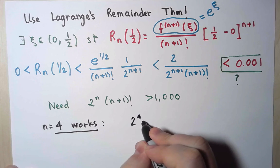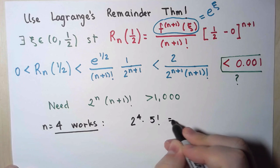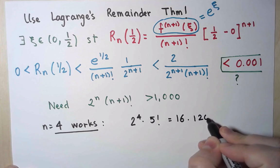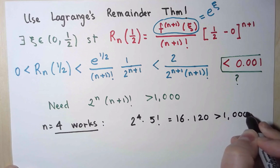Because 2 to the 4 times 5 factorial is 16 times 120, which is definitely greater than 1,000. There. So that's the one I'll take. So I'm going to go back, and I need to use the fourth Taylor polynomial, and evaluate it at 1/2.